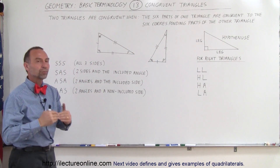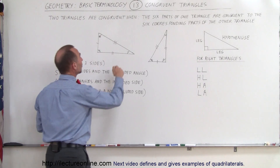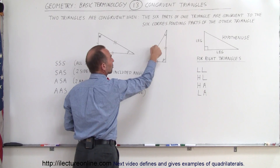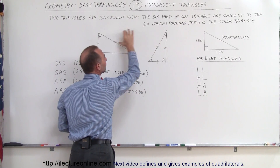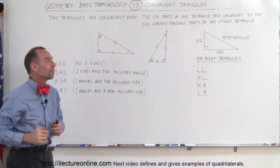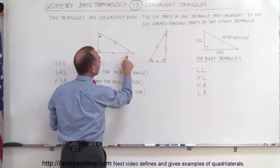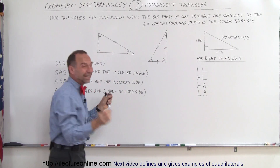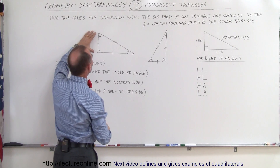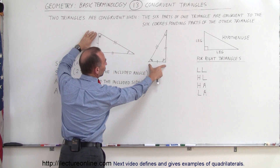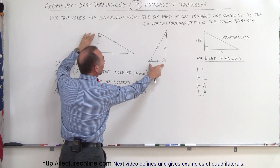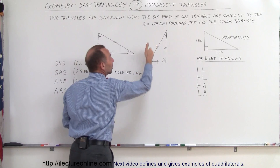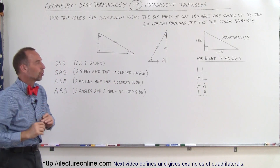So what are the corresponding sides and corresponding angles? Notice we have the longest of the three sides right here — it has three thick marks. Here, the longest side also has three thick marks, indicating these two sides are congruent, meaning they are the same length. This side and this side each have two thick marks, indicating they are corresponding sides of the same length. And the short side of each triangle has one thick mark, indicating they are both the same length. Therefore, all three corresponding sides are congruent.